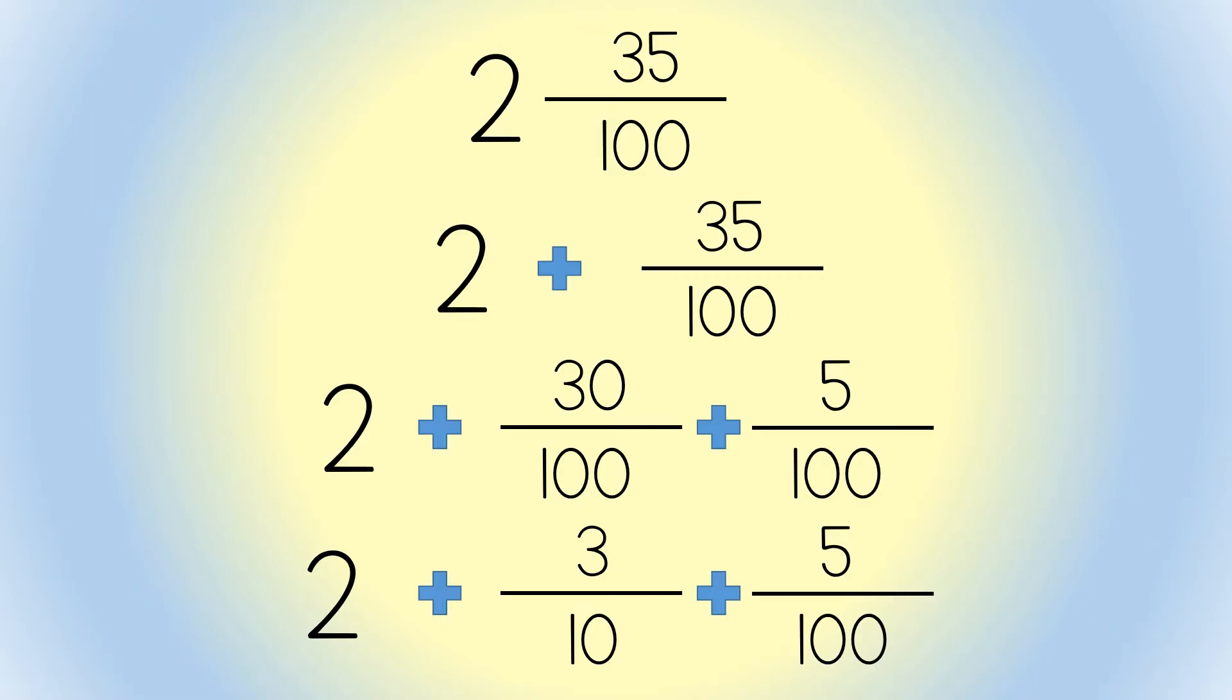Every place here is represented: the ones, the tenths, and the hundredths in expanded form. 2 and 35 hundredths.